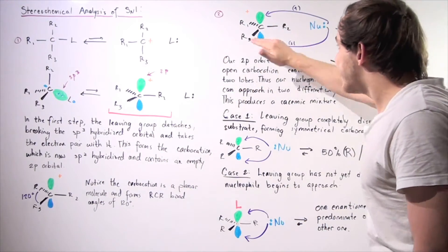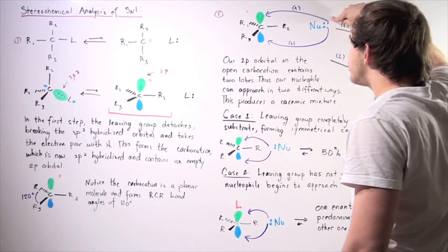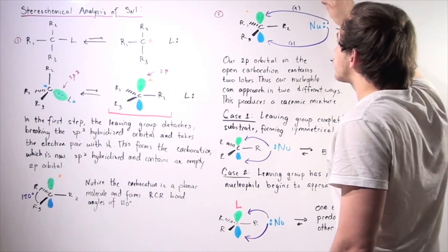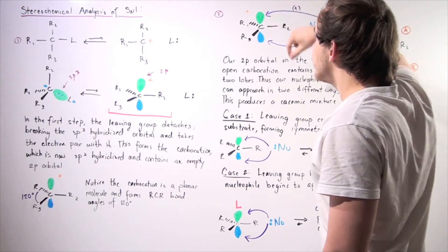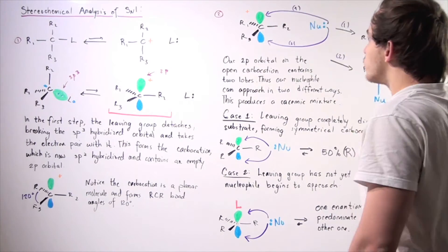Notice in this case, when the leaving group completely detached, our nucleophile has two ways that it can go. It can either attack from the top, attack in the green lobe, the top lobe, or it can attack the bottom lobe, the blue lobe.